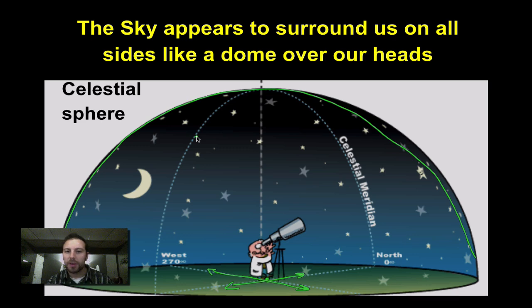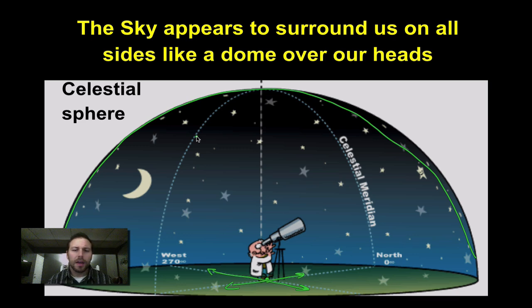When you look up in the sky, it doesn't matter if it's a plane, stars, the Sun, or any other satellites that we see — that's all appearing on the celestial sphere.